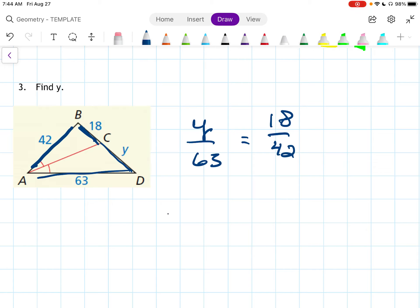I multiply both sides by 63 to get Y equals 63 times 18 over 42. And I'm going to type that in, 63 times 18 divided by 42. And I got 27. That's supposed to be a multiplication sign. 27. So Y equals 27.